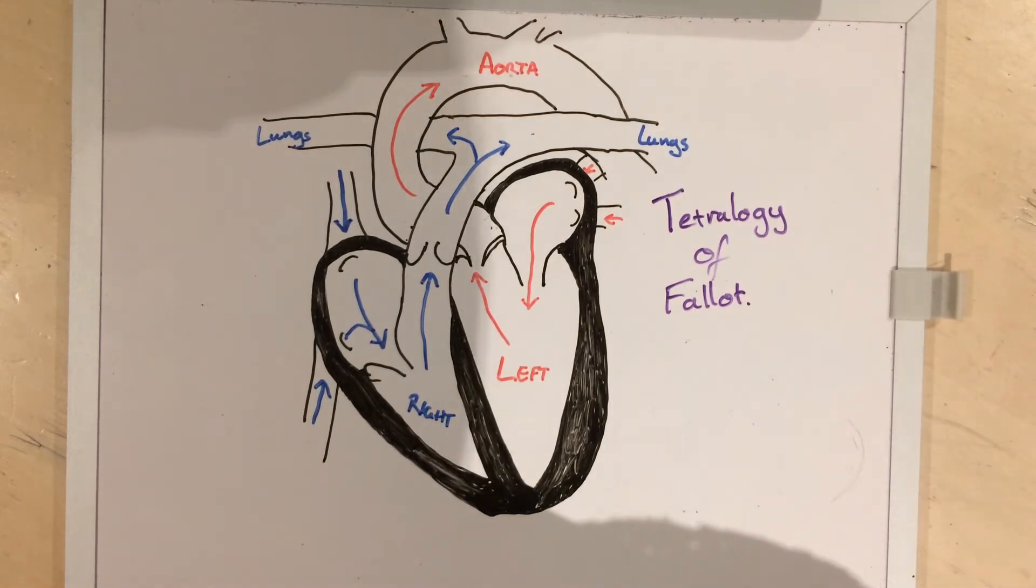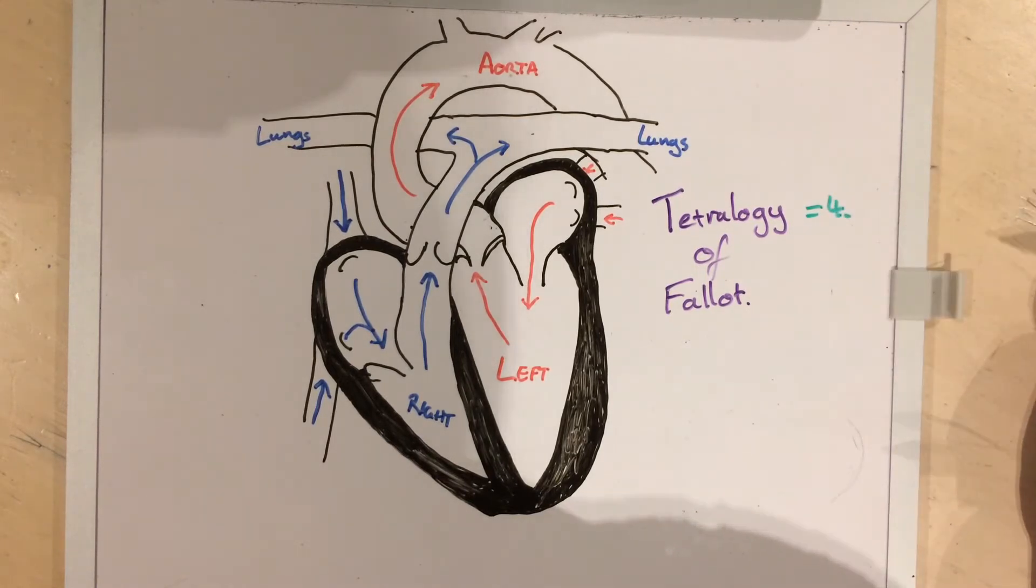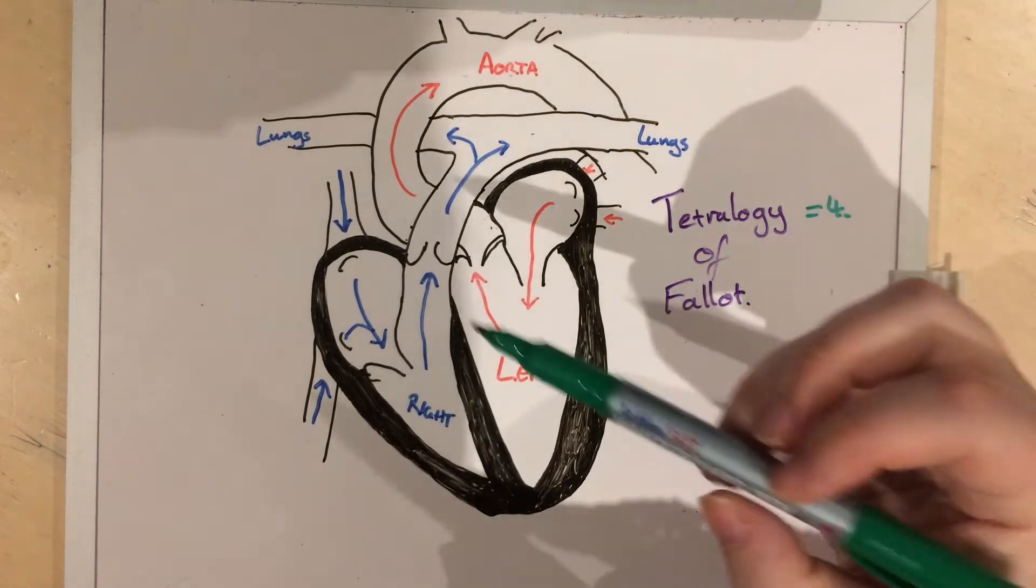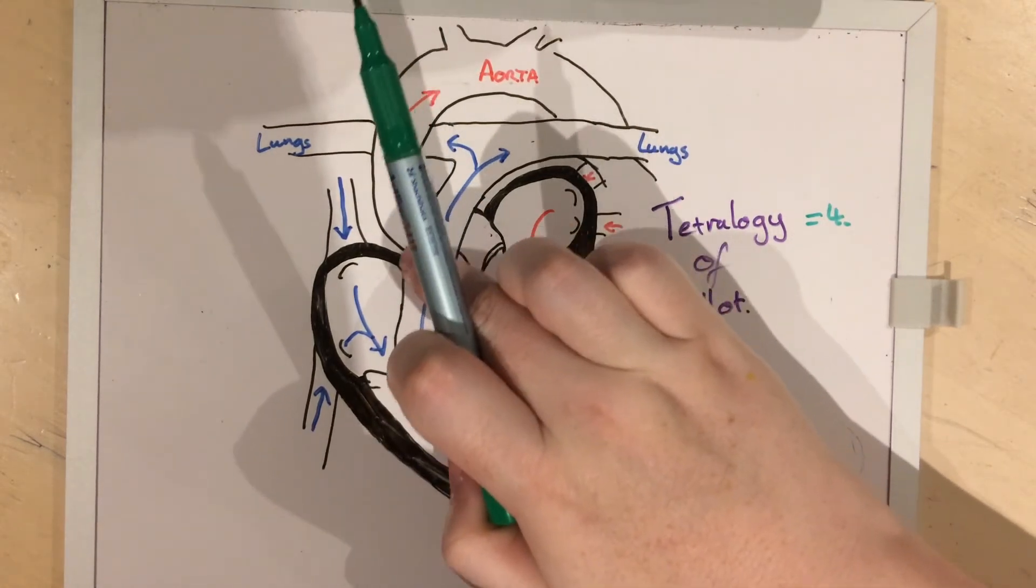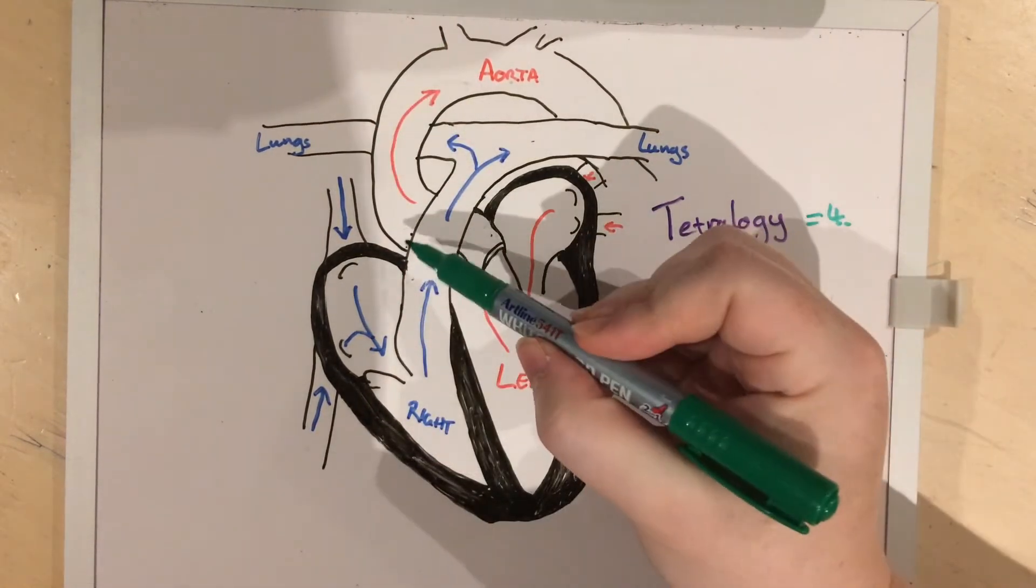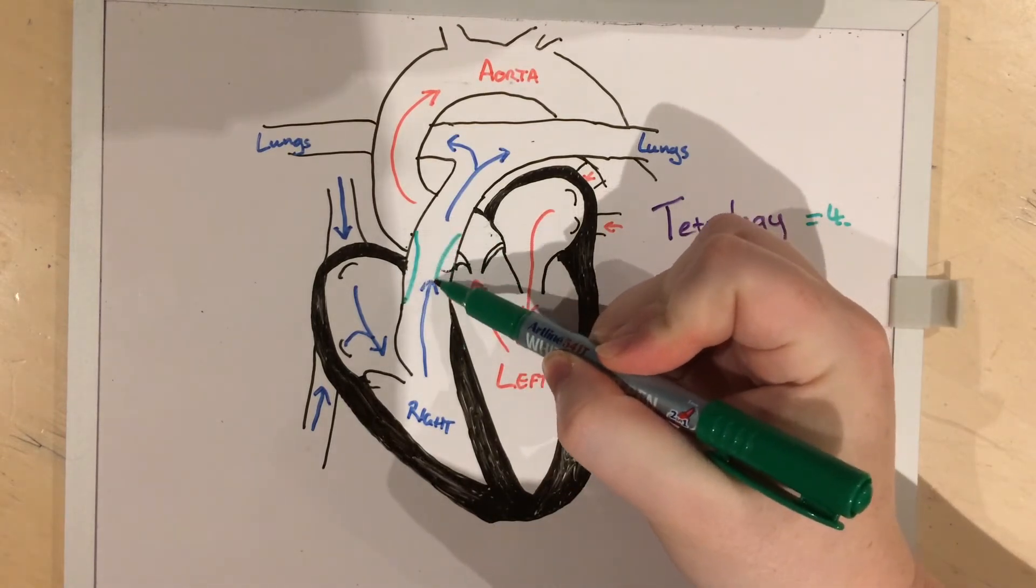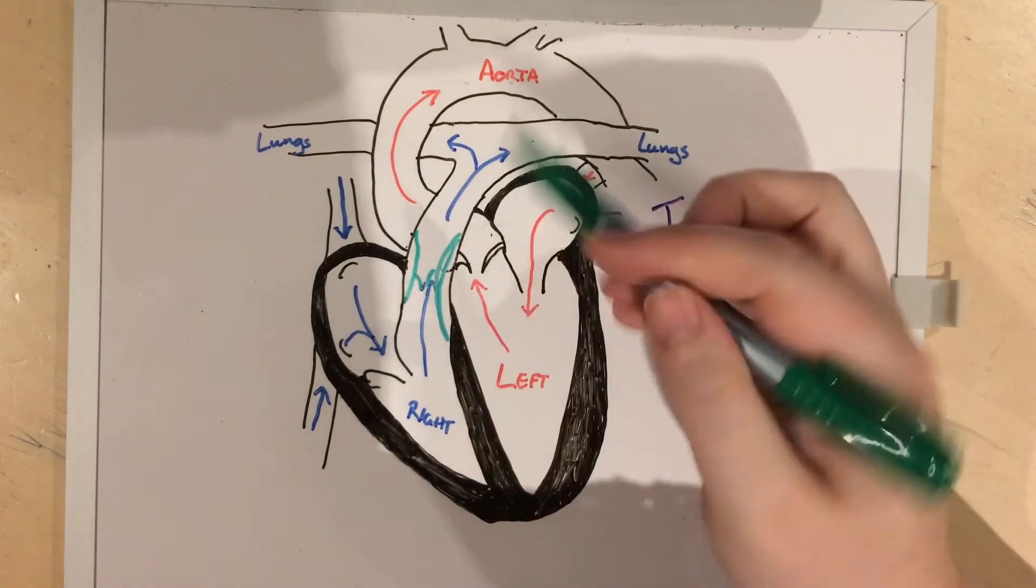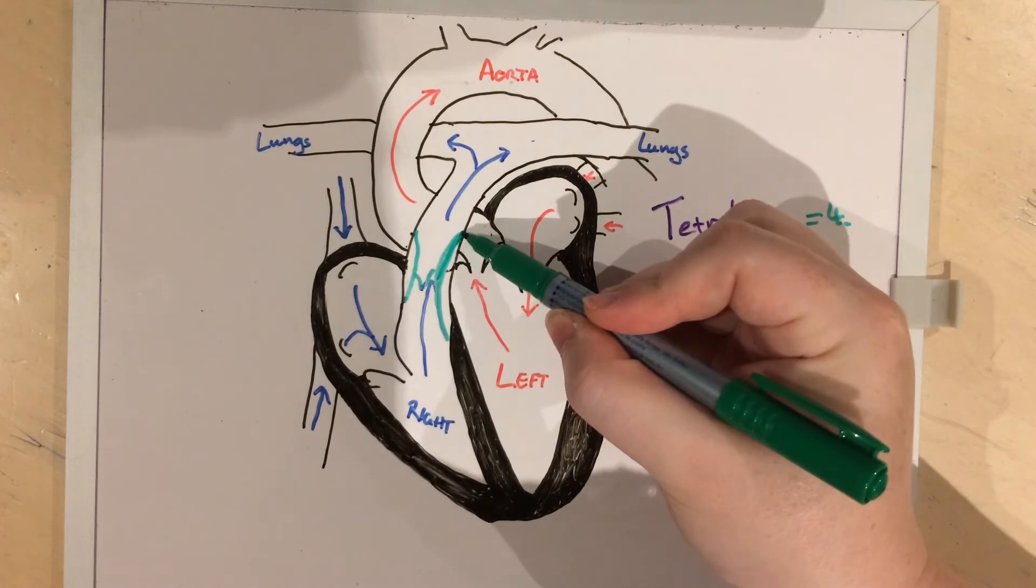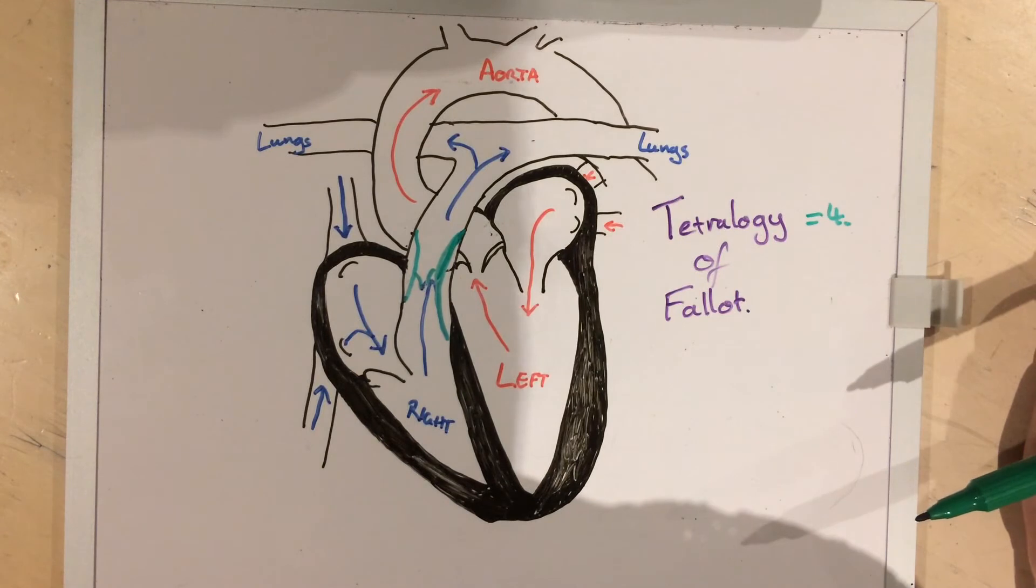But in a Tetralogy of Fallot, there are four different things that have gone wrong. First of all, our pulmonary artery is far too small. This is called a pulmonary stenosis and it can be stenotic either at the valvular level or just near it, which makes it harder for any of that blood to actually get up and go to the lungs.